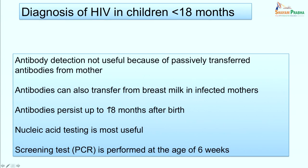For diagnosis of HIV in infants or children below 18 months, antibody detection is not useful because antibodies are passively transferred from mother to baby — including via breast milk — and persist up to 18 months after birth. Therefore, nucleic acid testing is used, and DNA PCR is the most commonly performed test for diagnosis of HIV infection in children below 18 months.